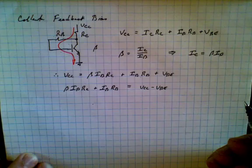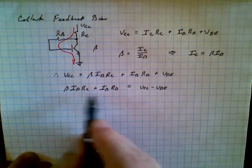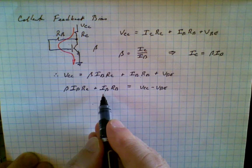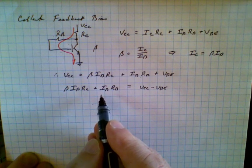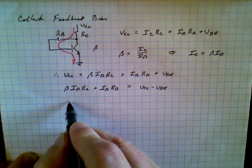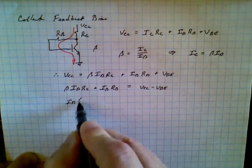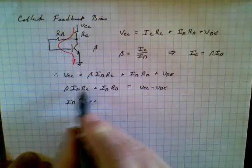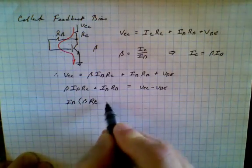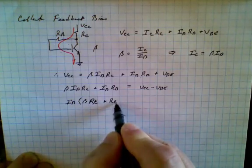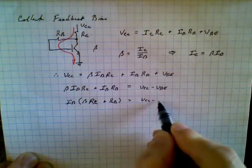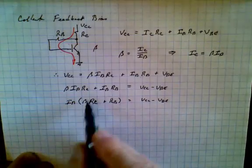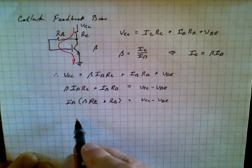Now right off the bat you'll notice that we can pull out the term for Ib. So we'll do that. This is Ib times beta times Rc plus Rb is equal to Vcc minus Vbe. And now of course we can divide both sides by this term and just have Ib by itself.